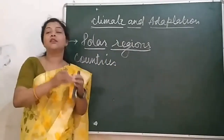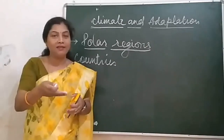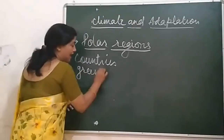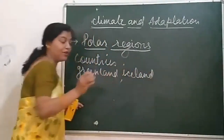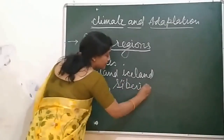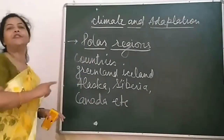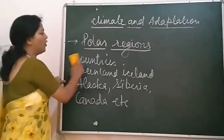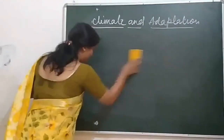What are the countries which come under this polar region? Have you ever heard about Greenland, Iceland, Sweden, Canada, Alaska, Siberia? These places are found in polar regions. Their climatic conditions are very cold, and almost the whole year people wear woolen sweaters and coats.